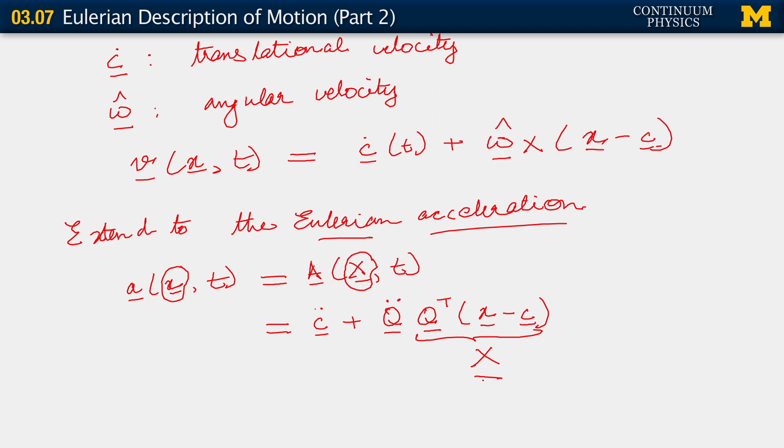What we will do next is work a little with Q double dot. So consider Q double dot. I'm going to rewrite it as Q double dot Q transpose Q. And I've done nothing here, because Q transpose Q is simply the isotropic second order isotropic tensor, your identity matrix. You can multiply any tensor by it and it leaves the tensor unchanged. So that still is just Q double dot on the right hand side.